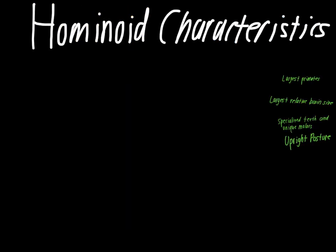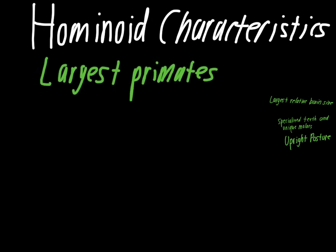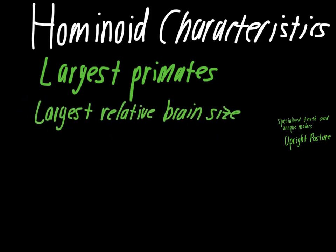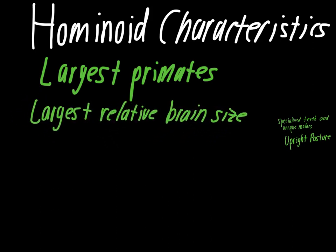The next thing to talk about are some characteristics of hominoids. First, they're the largest of the primates — gorillas and orangutans are examples, much bigger than some of the New World monkeys, which are relatively small. They also have the largest relative brain size. Brain size itself doesn't matter as much as brain size relative to the rest of the body. The structure of the brain is also very important, and hominoid species generally have a more complicated brain structure, which allows for more processing power and more upper-level thinking abilities.